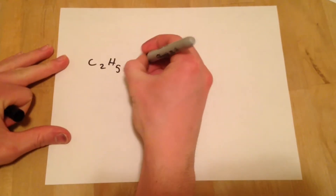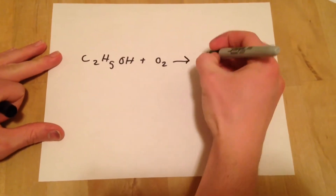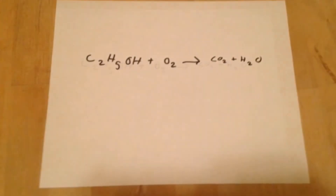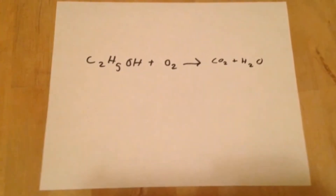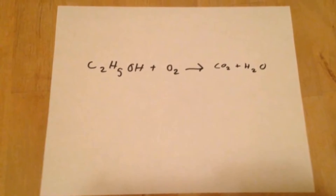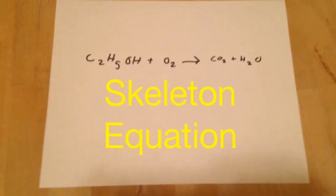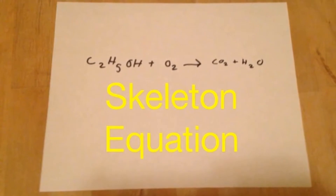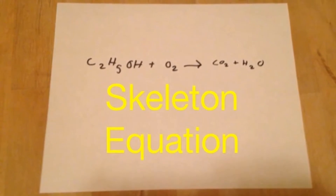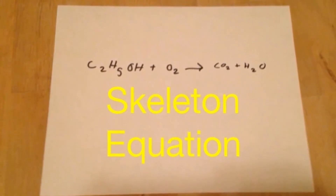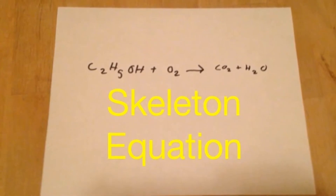Let's take a look at the chemical side of it all. Here is the basic chemical equation that we have made for this reaction. This is a skeleton equation. A skeleton equation is an unbalanced equation, meaning there are not equal amounts of each element on either side of the equation.